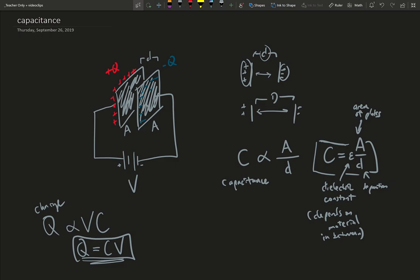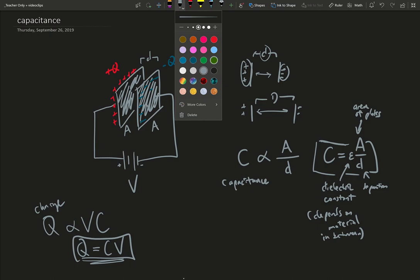So the equation that we are working with to define the units of capacitance, the most convenient equation for us to use, I'll use this color, is this equation, the Q equals CV.